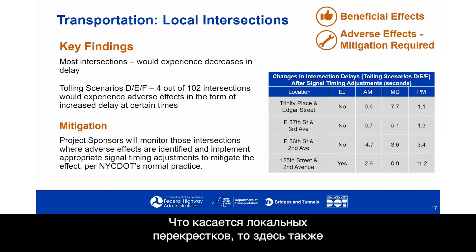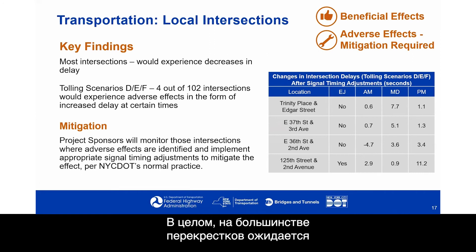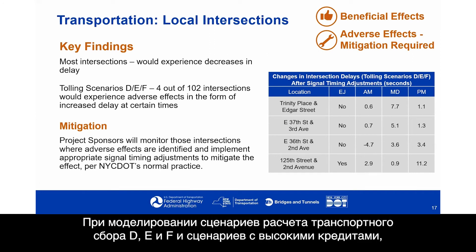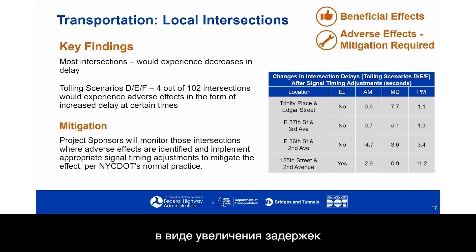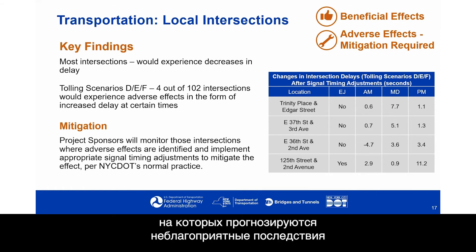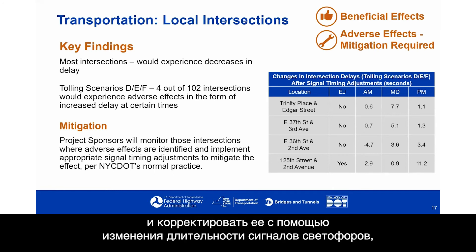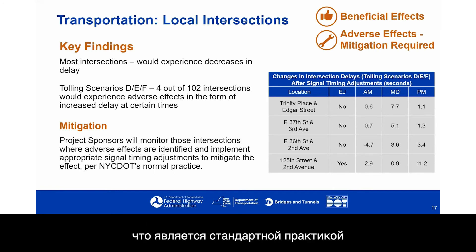With respect to local intersections, there are both beneficial effects and adverse effects where mitigation is required. Most intersections would experience decreases in delay. Tolling Scenarios D, E, and F — the high credit scenarios — have four out of 102 intersections that experienced adverse effects in the modeling in the form of increased delay at certain times, and these are shown on the right. Project sponsors will monitor those intersections and implement appropriate signal timing adjustments per New York City Department of Transportation's normal practice.